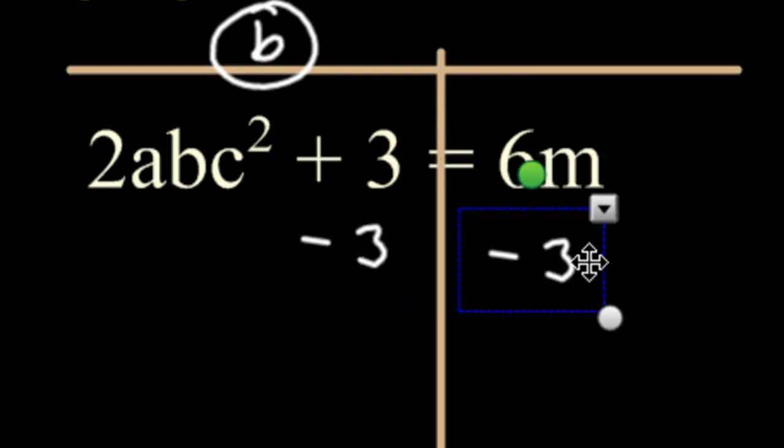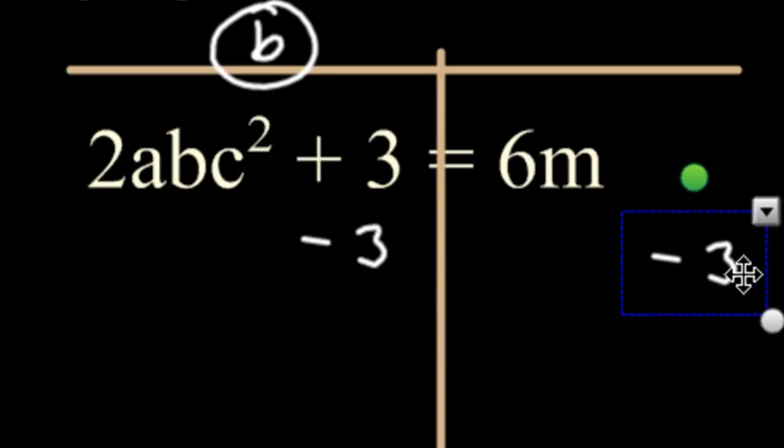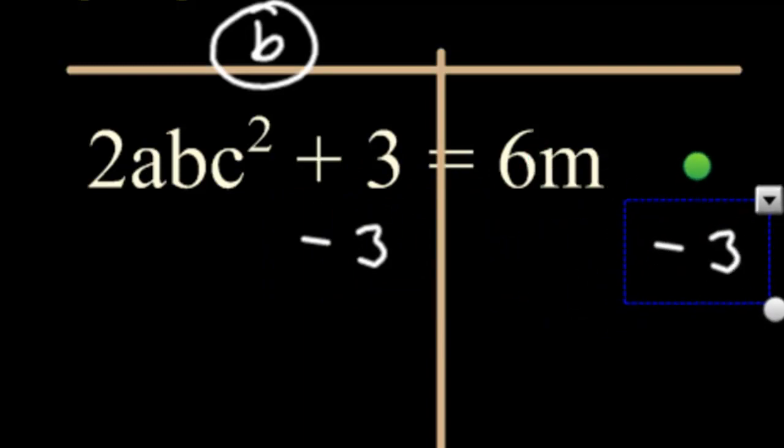Since I can't subtract a 3 from 6m, since they're not like terms, I'm just going to put it aside like that. Let's just do one thing at a time. Let's start a new line.